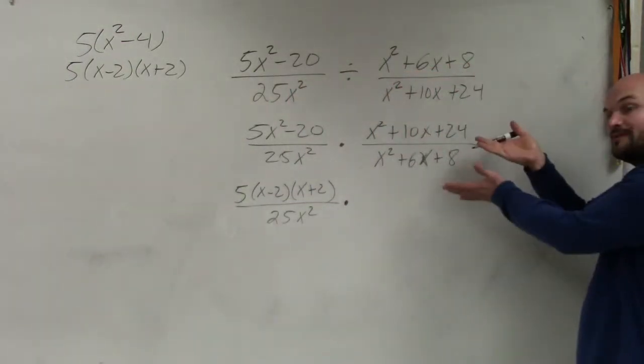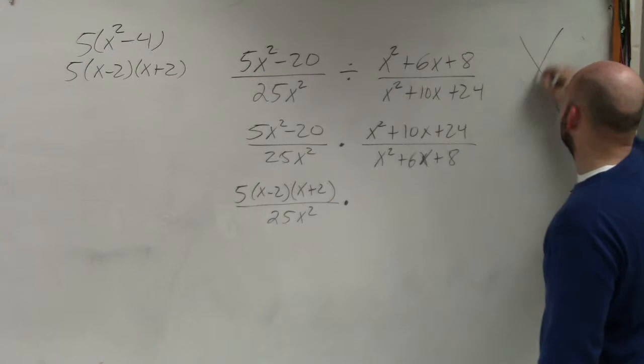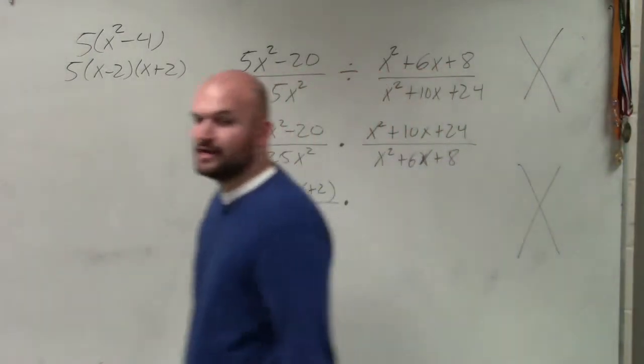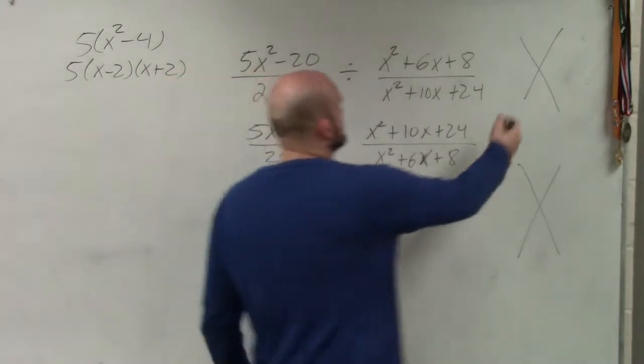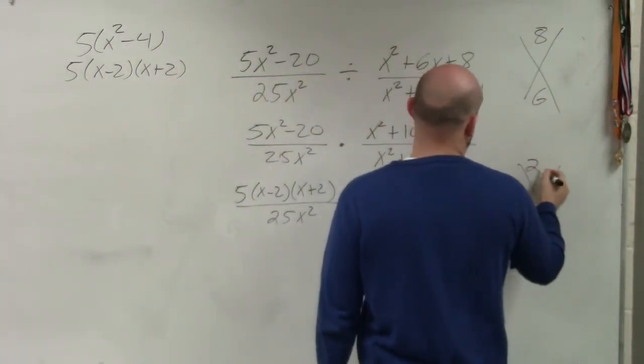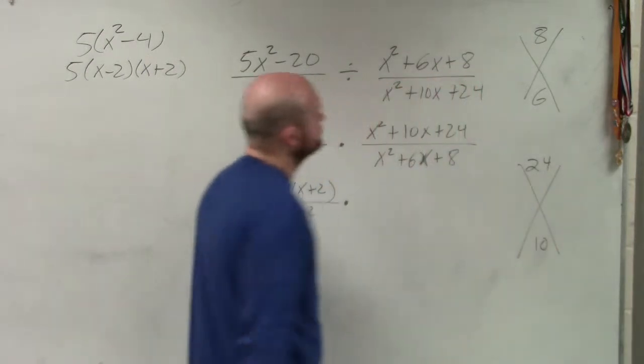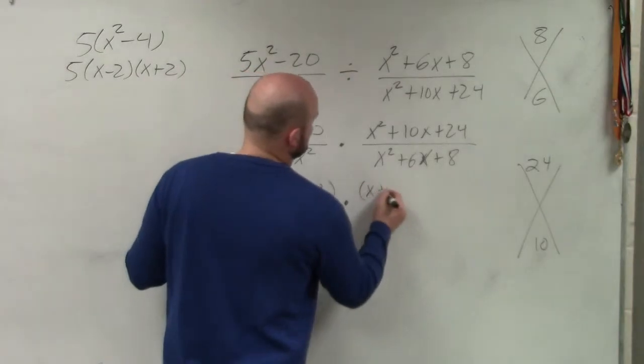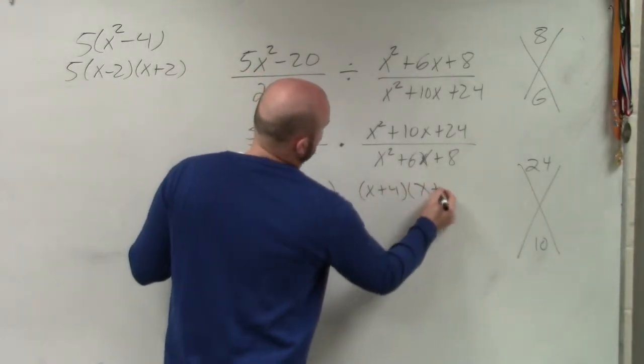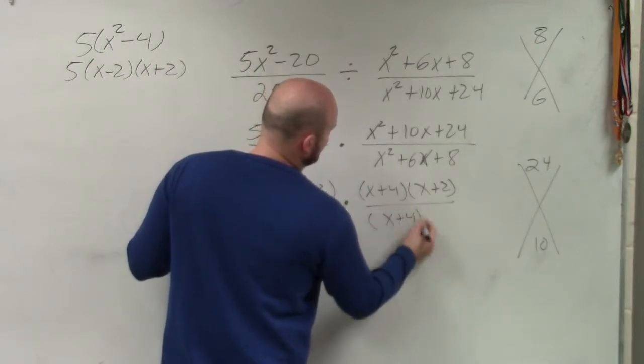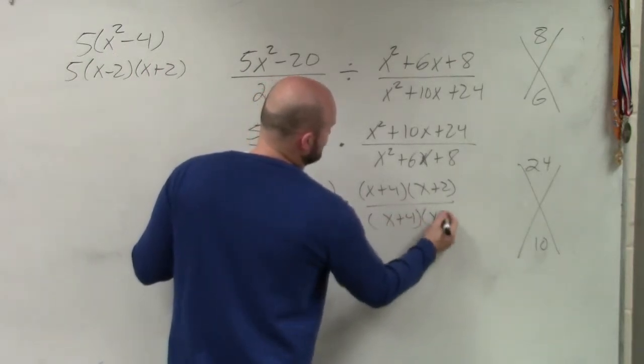Multiply. Now over here, we have two different trinomials. So going back to what we did last chapter, we have to factor the trinomials. And remember, the trinomials is basically: what two numbers multiply to give you 8? Add to give you 6. What two numbers multiply to give you 24? Add to give you 10. So over here, we're going to have (x + 4)(x + 2), where over here we have (x + 4)(x + 6).